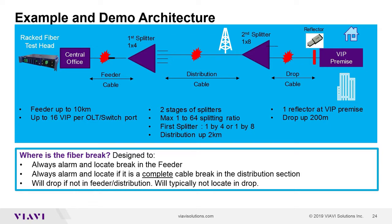The feeder cable affects everybody downstream. Then we have a 1x4 splitter going into the distribution section of the network, and from there another splitter breaks down into a 1x8 section of fibers. All VIP premises — which could be a radio area network, a home, or a business — need a reflector at every VIP premise to amplify the reflectance signal.